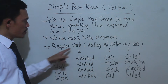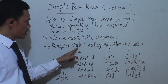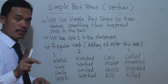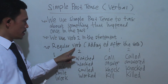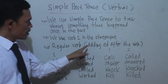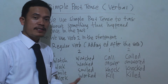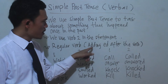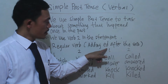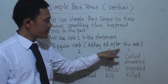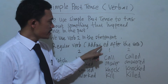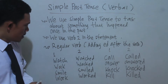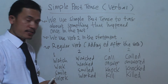There are two kinds of verbs. Number one is regular verb. To form a regular verb in past tense, we have to add "-ed" after the verb. For example, let's pay attention to these items.